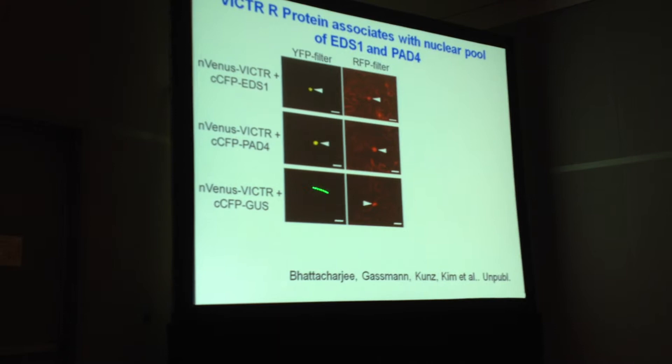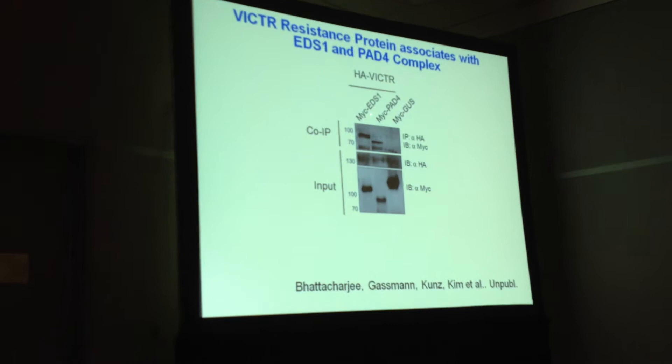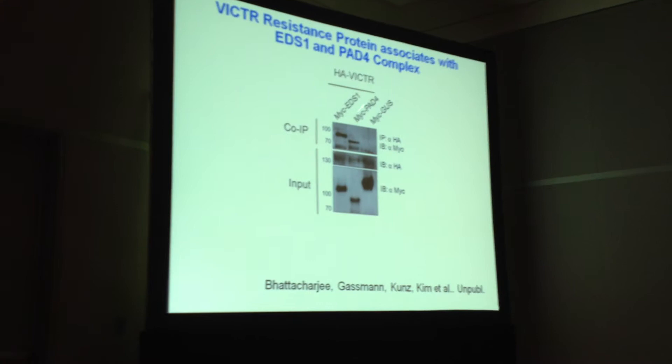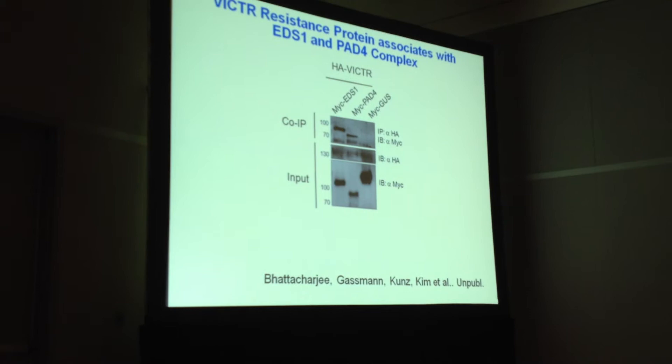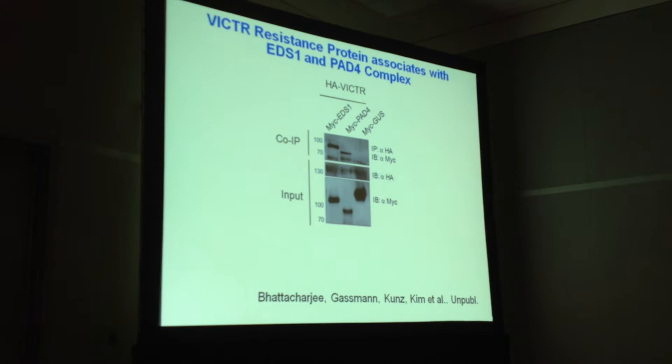That was split-YFP, so what about co-immunoprecipitation? Using HA-tagged Victor and MC-tagged EDS1, PAD4, and a control, we get co-immunoprecipitation of EDS1 with Victor and PAD4 with Victor, but not the control, indicating that EDS1–Victor and PAD4–Victor can co-reside in protein complexes in vivo. We're further pursuing this biochemical approach.